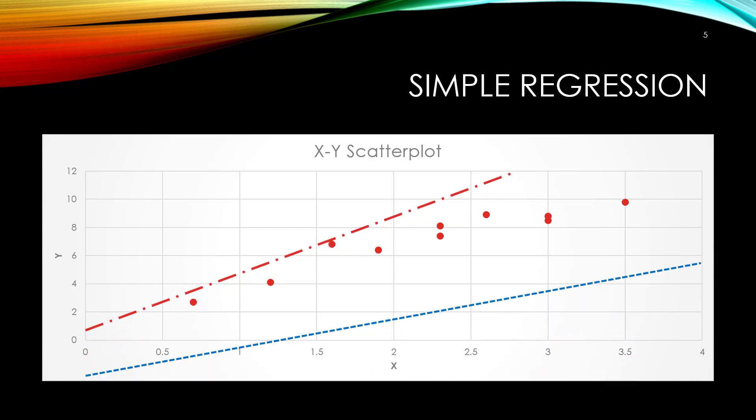Going back to our scatter plot, we can draw many lines through the data points. There's an infinite number of lines to attempt to draw. We want to find the one particular line such that when drawn, the average distance of the points to the line is minimal.